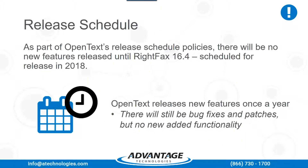As part of the OpenText release schedule policies, there will be no new features released until RightFax 16.4, which is scheduled for release in 2018. This is because in the past, releasing too many service packs and feature packs — while it did fix bugs and add features — also introduced new bugs. Having more time between releases will allow a more thorough testing period and in turn make the release more stable.